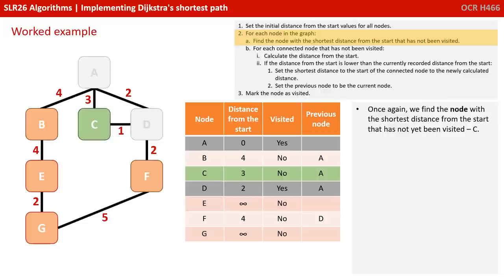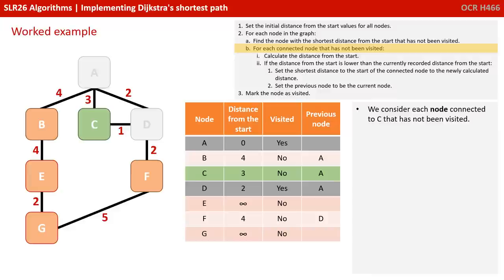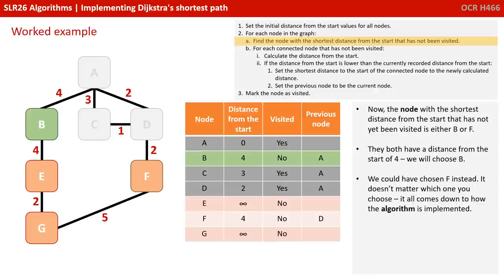We find the node with the shortest distance from the start that has not yet been visited — that's node C. We consider each node connected to C that has not been visited. There are none, so we simply mark this node as visited. Now the node with the shortest distance from the start not yet visited is either B or F — both have a distance of 4, so we choose B. It doesn't matter which one you choose; it comes down to how the algorithm is implemented.